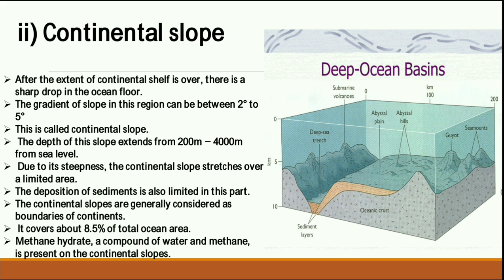After the continental shelf there is a deep slope called the continental slope. After the extent of the continental shelf, the ocean floor drops down at a gradient of about 2 to 5 degrees. The depth of the continental slope is from about 200 meters to 4,000 meters. Because of its steepness, the continental slope stretches over a limited area and sediment deposition is also limited here.